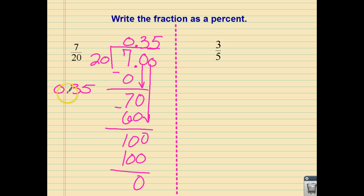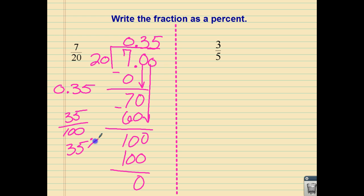So if we know that this is read as 35 one-hundredths — because we have the tenths place and the hundredths place — we can write it as a percentage: 35 one-hundredths is known as 35%. If you didn't want to use the fraction/long division approach, remember from the last screen that if you take a decimal and multiply by 100, or move it two times to the right, you'll end up with 35% — going 1, 2, then dropping the decimal and adding the percent sign.